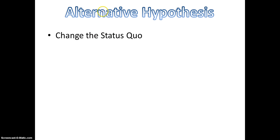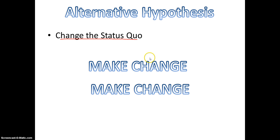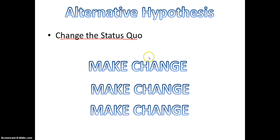So what about the alternative hypothesis? The alternative hypothesis is just the opposite of the null hypothesis — you are going to change the status quo; there's going to be some change or some effect.